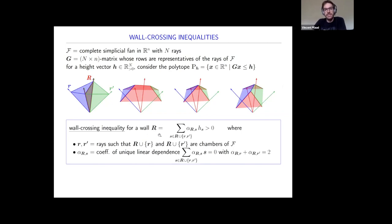The wall-crossing inequality for a wall R is an inequality involving the heights H. The coefficients in front of the heights are given by the unique linear dependence amongst the rays. Since I have a simplicial fan, I have dimension-many plus one rays here, giving a unique linear dependence up to multiplication. Choosing the multiplicative factor so the coefficients in front of blue r and green r prime are positive, I transform this linear dependence into an inequality on H—the wall-crossing inequality. Wall-crossing inequalities come from linear dependencies along the rays.